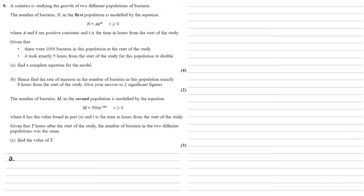Given that there were 1000 bacteria in this population at the start of the study, and it took exactly five hours from the start of the study for this population to double, we need to find a complete equation for the model.